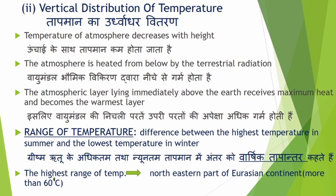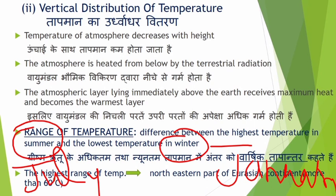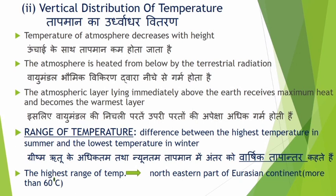The difference between the highest temperature in summer and the lowest temperature in winter is called the annual range of temperature. The highest annual range of temperature — more than 60 degrees Celsius — is found over the north-eastern part of the Eurasian continent. This is due to continentality: it is the interior part of the largest landmass of Eurasia, which causes a very high variation in temperature.